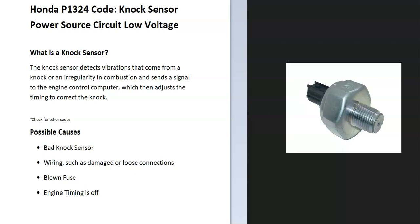What is a knock sensor? The knock sensor detects vibrations that come from a knock or irregularity in combustion and sends a signal to the engine control computer, which then adjusts the timing to correct the knock. While an engine has other components that get the timing correct, this can get off a little bit sometimes, and when the timing is off it can cause problems with the cylinders firing correctly, which causes a knock.